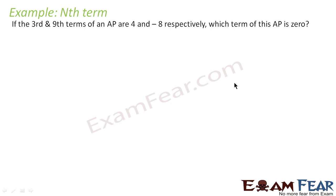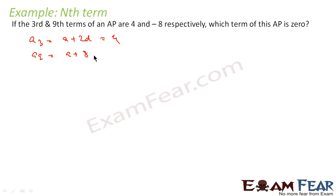If the third and ninth terms of an AP are 4 and minus 8 respectively, which term of the AP is equal to 0? We set up two equations: a3 equals a plus 2d equals 4, and a9 equals a plus 8d equals minus 8. We have two equations and need to find a and d first. Subtracting the equations gives 6d equals minus 12.